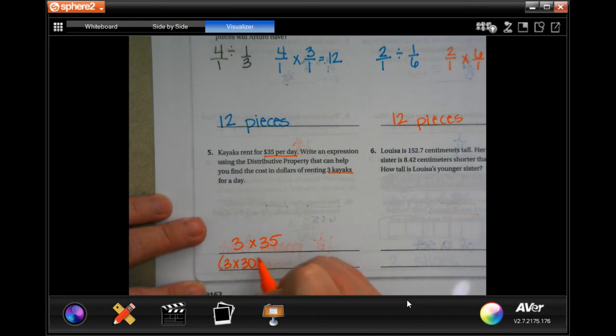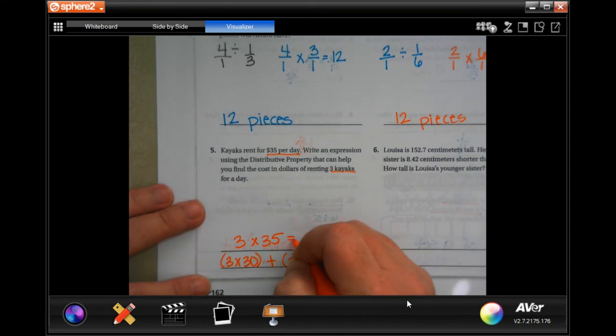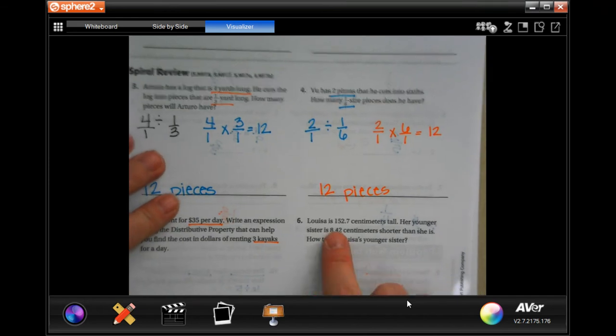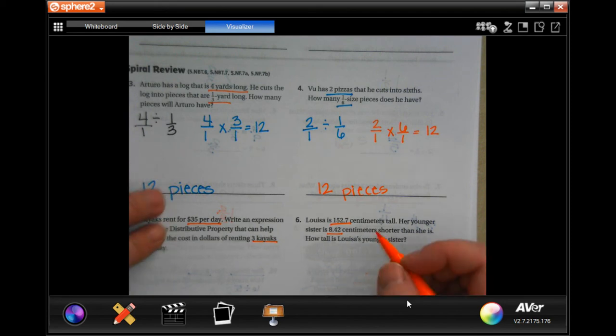All right, Louisa is 152.7 centimeters tall. Her younger sister is 8.42 centimeters shorter than she is. How tall is Louisa's younger sister? So we're going to take how tall Louisa is, we're going to subtract the difference.